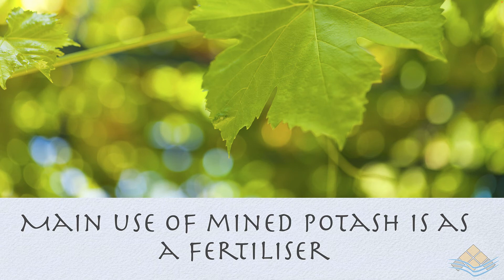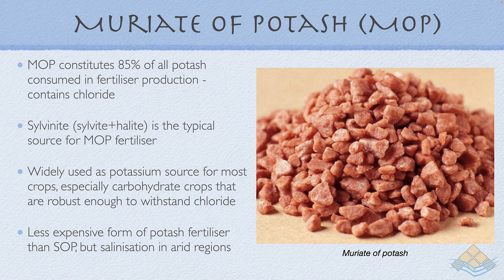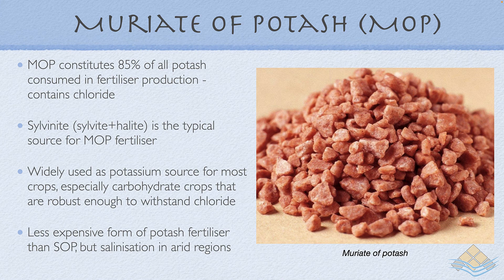The focus of the potash industry's mining source using sylvite shifted to Canada and to Russia by the middle of last century. The main use of mined potash is as agricultural fertilizer, and there are two main associations for economic production of potash fertilizer: muriate of potash and sulfate of potash. Muriate of potash dominates, making up more than 85 percent of the potash currently utilized in agricultural fertilizer production. The disadvantage of MOP or sylvinite-sourced production is that this fertilizer contains chloride, which leads to problems with salinization. It's cheap and easy to manufacture and mine, so it's widely used as the potassium source for most fertilizer applications, especially carbohydrate crops strong enough to withstand elevated chloride levels. However, its continued use in more arid regions of the world can lead to salinization problems in the soil.